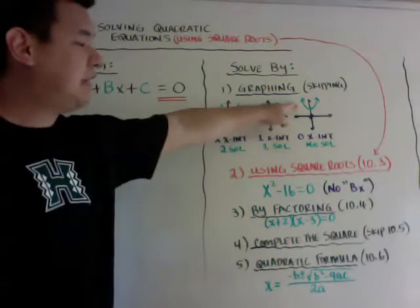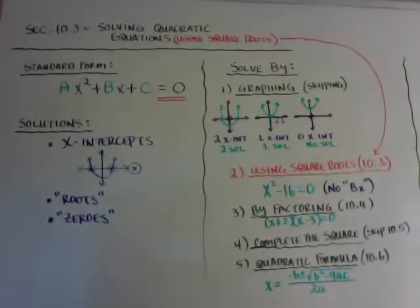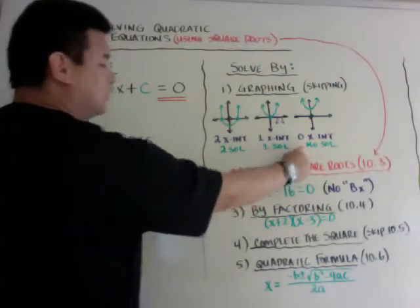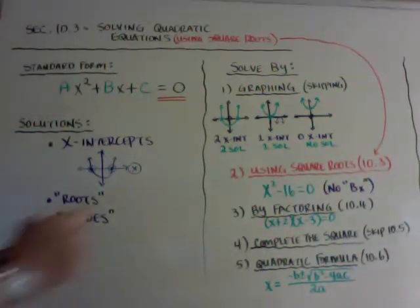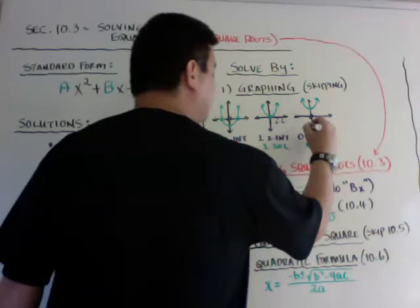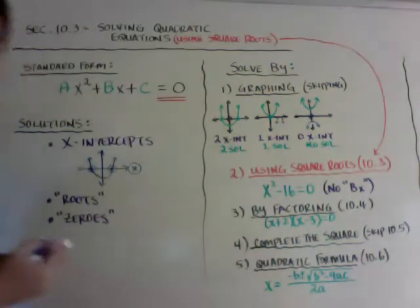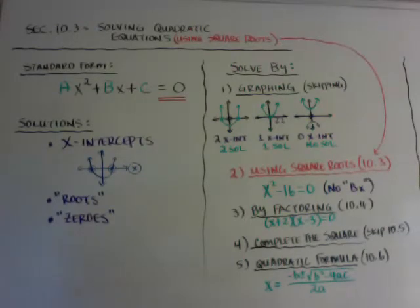If it never hits the x-axis, like that green line there on the right, you will have no x-intercepts, no solution. It could be a downward parabola that goes like this, and again, it never hits the x-axis, so that has no solution as well.